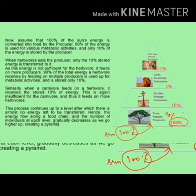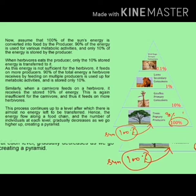Now next is your flow of energy. Green plants use solar energy during photosynthesis and convert it into chemical energy. Assume that 100% of the sun's energy is converted into food by the producers. 90% of the energy is used for various metabolic activities by the plant, and only 10% of the energy is stored by the producer. When herbivores eat the producer, only that 10% stored energy is transferred to herbivores. As this energy is not sufficient for herbivores, it feeds on more producers.